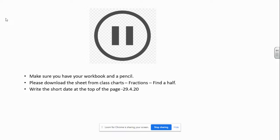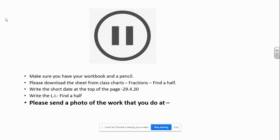Write the short date at the top of the page, 29.4.20, and then write the LI, find a half. Once you have finished your work, please send a photo to year2@grange.harrow.sch.uk.